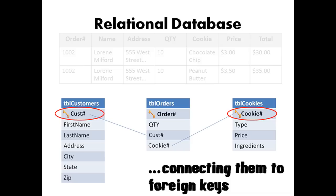So now, when we take an order, the only thing we have to type in is the customer's ID number, and then the database will be able to connect that number to all of the information we previously typed into the customer's table for that customer. Same goes for the cookie information — all we have to type when placing an order is the cookie number, and Access will connect that number in the orders table to all of the other information stored in the cookies table, thus saving a lot of time and storage space inside the database.